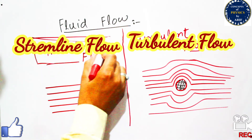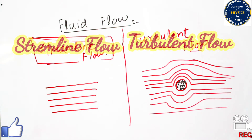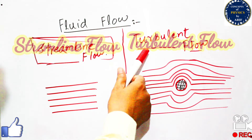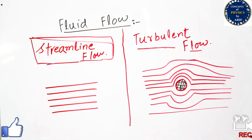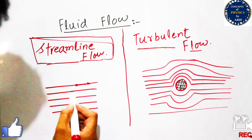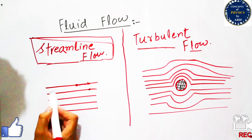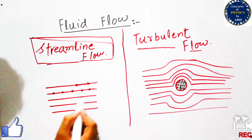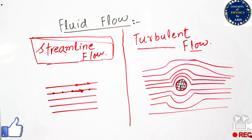From its name, the meaning can be explained: streamline flow can be observed as steady flow, and turbulent flow can be known as unsteady flow. We can define streamline flow from this diagram — every particle moving in one direction will follow the particle from the previous direction, so all the particles are in one line and any particle follows the other particle in the same line. This is known as streamline flow or steady flow.